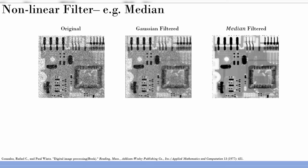This is another interesting concept: the median filter. You may have encountered the median in statistics, but here it has a beautiful application in image processing. To illustrate how it works, consider a circuit board X-ray image. In many real scenarios, such images get corrupted by a type of noise known as salt and pepper noise.